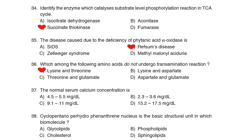36th Question: Which among the following amino acids does not undergo transamination reaction? Correct Answer: Option A: Lysine and threonine. 37th Question: The normal serum calcium concentration is Correct Answer: Option C: 9.1–11 mg per dL. 38th Question: Cyclopentano perhydrophenanthrene nucleus is the basic structural unit of which biomolecule? Correct Answer: Option C: Cholesterol.